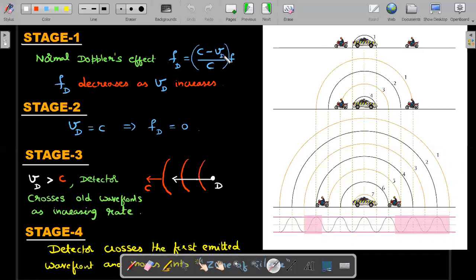Then what happens once the detector reaches the velocity of sound itself, VD becomes C, then the detection frequency becomes zero. After that, something interesting happens.